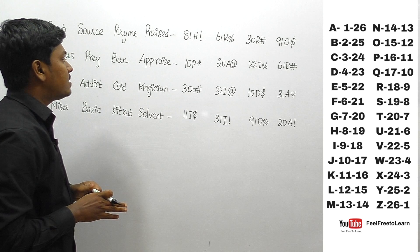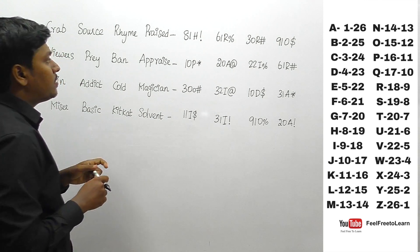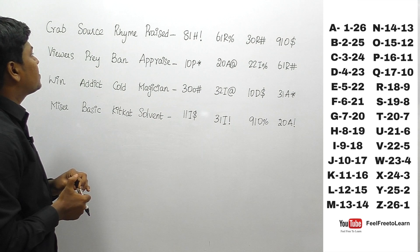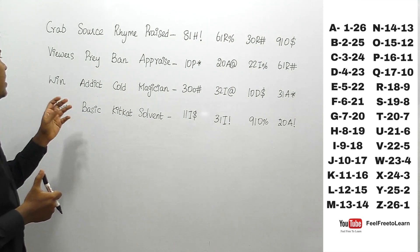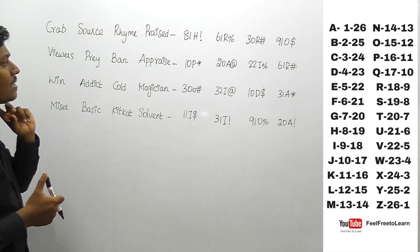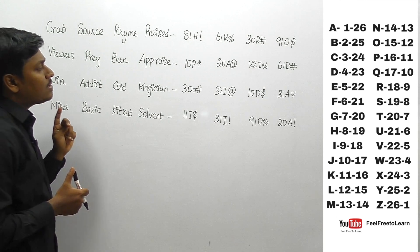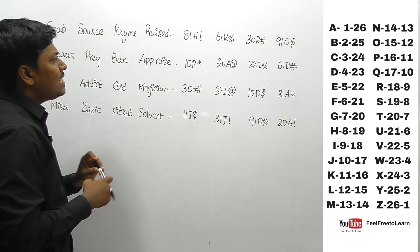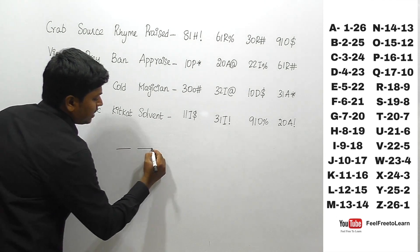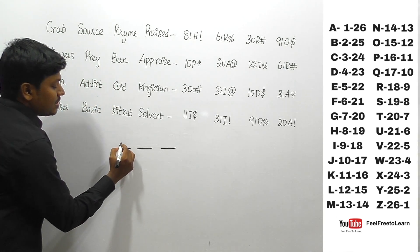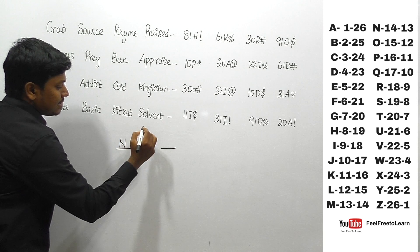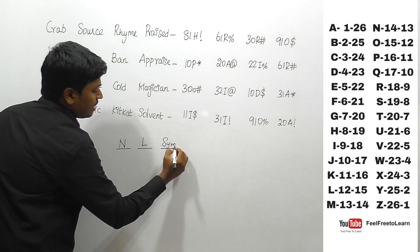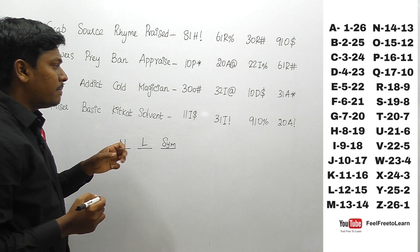Let me move on to question number three on the new pattern on coding and decoding. So crab, source, rhyme, and priced; similarly viewers, pray, ban, and apprised — these can be written as 81, H, 61, R, percentage. We can say that each word is written by three different terms: a number, a letter, and a symbol.